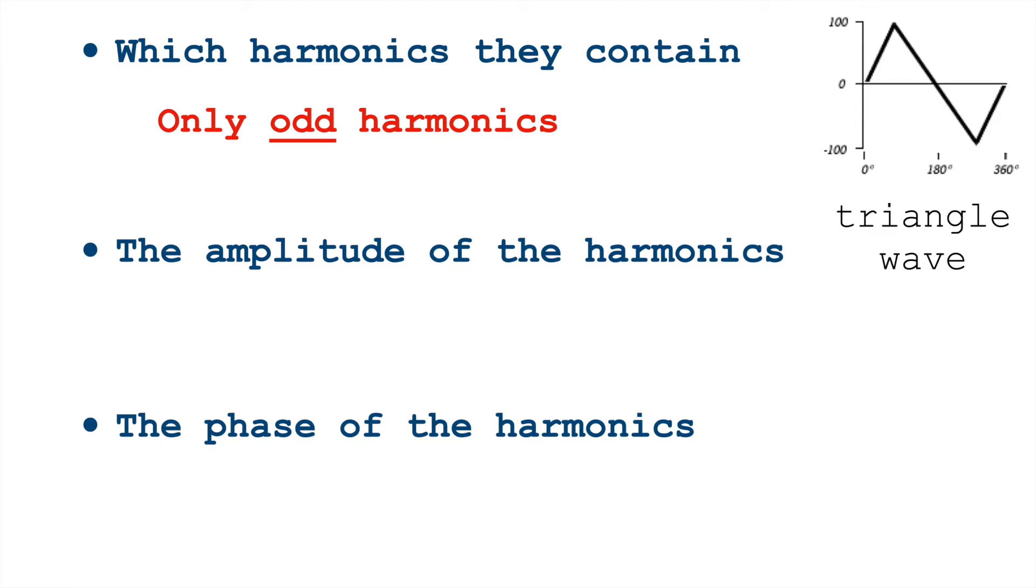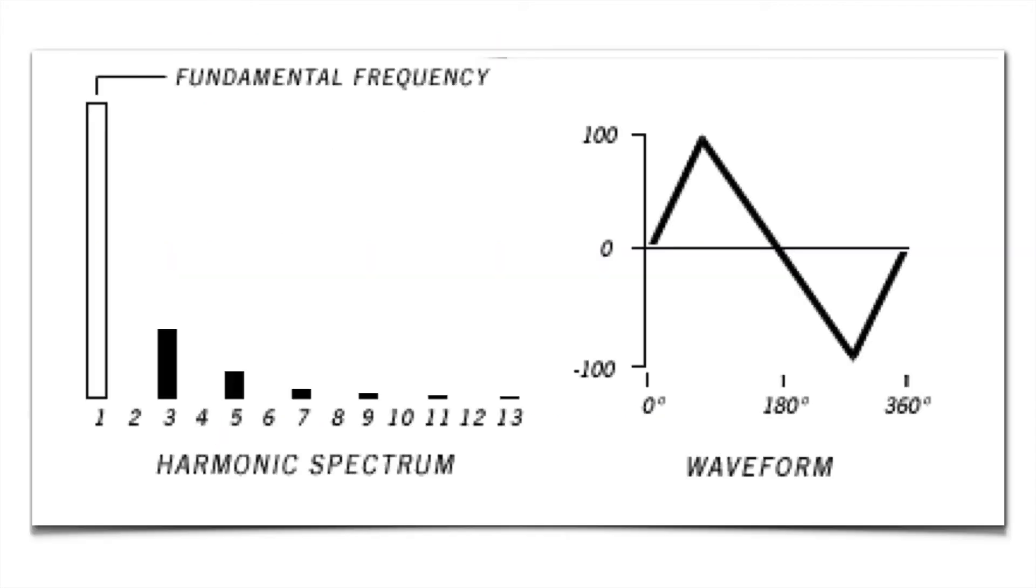Also, the amplitude of these harmonics is one over the harmonic number squared. So that means the third harmonic is one ninth of the amplitude of the fundamental. The fifth is one twenty-fifth, etc. So the triangle wave has far fewer harmonics, and also much quieter harmonics.